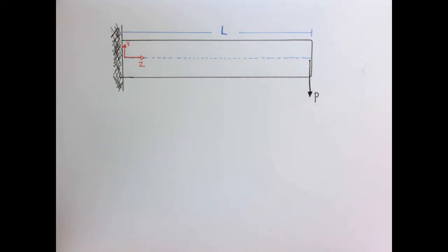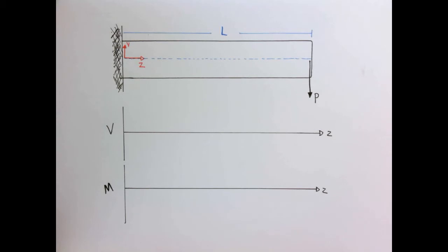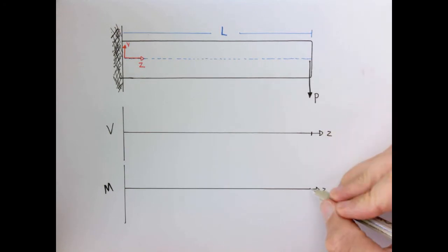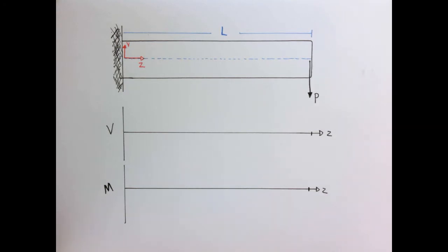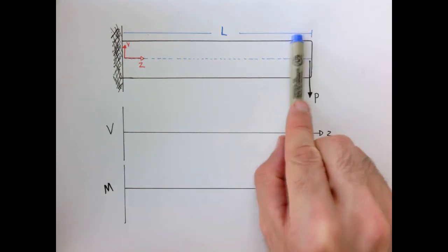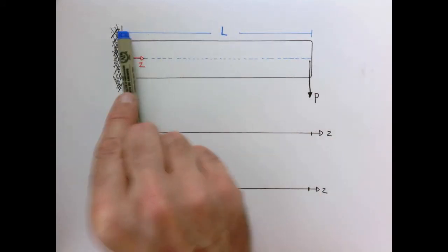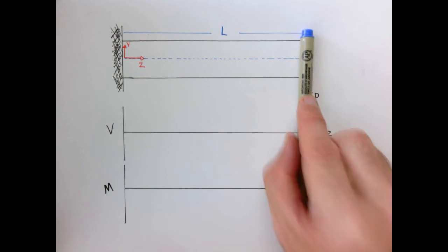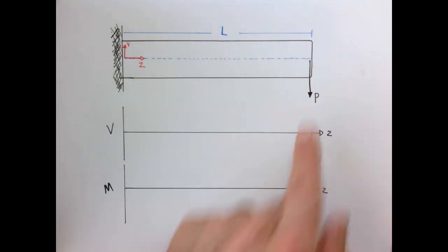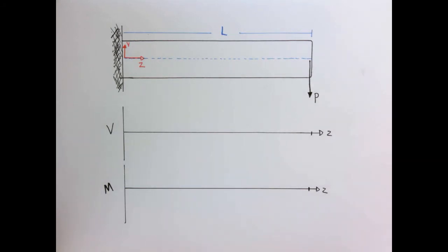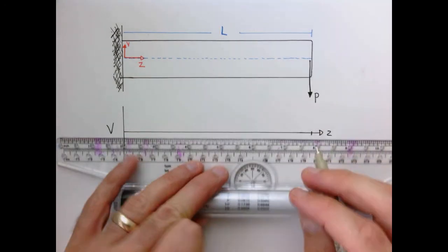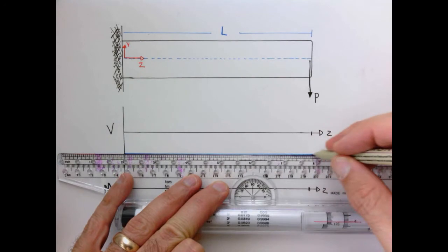Let's recall how to draw a shear and bending moment diagram for this beam. My coordinate direction is z, and I'll draw them up to the length l. The shear diagram is easy to get: no matter where I make an imaginary slice, the shear force on that surface is exactly equal to P — and by our sign convention, we draw it as minus P. So the shear diagram is just a straight horizontal line of magnitude P.